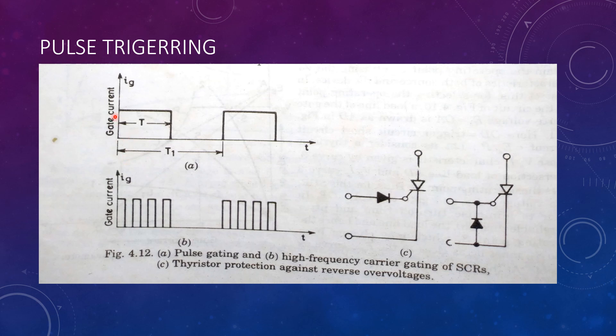With pulse triggering, greater amount of gate power dissipation can be allowed. However, it must be observed that this gate power dissipation must be less than PGM which is specified by the manufacturer.